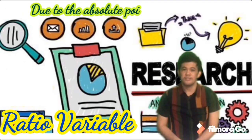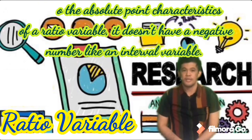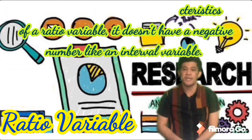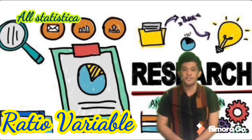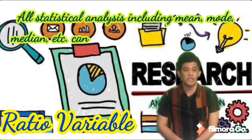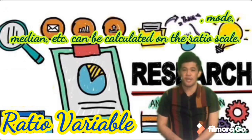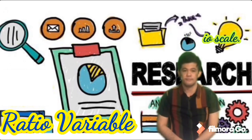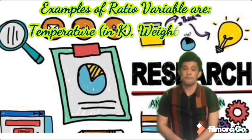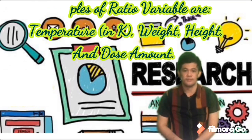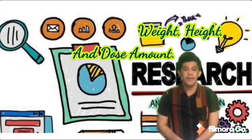Due to the absolute zero point characteristics of the ratio variable, it doesn't have negative numbers like an interval variable. All statistical analyses, including mean, median, and mode, can be calculated on the ratio scale. Examples of ratio variable are temperature in Kelvin, weight, height, and dose amount.